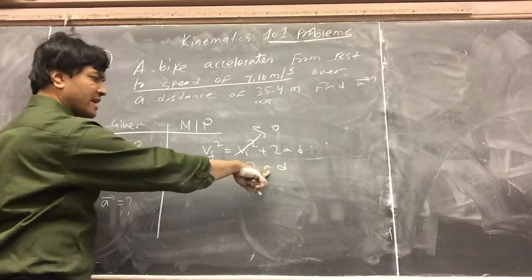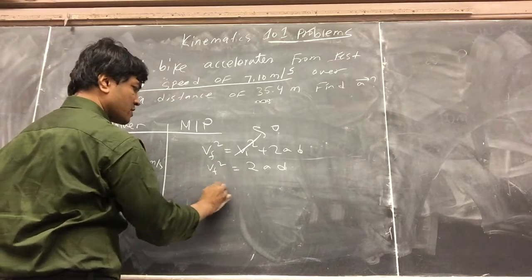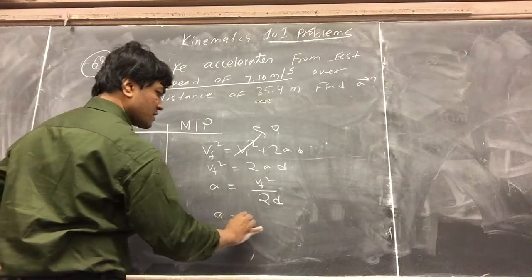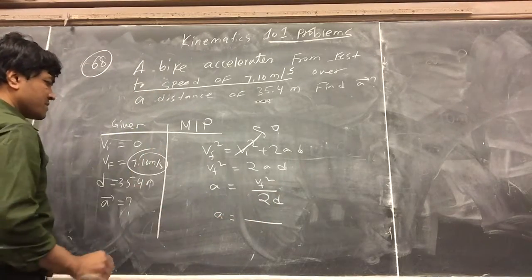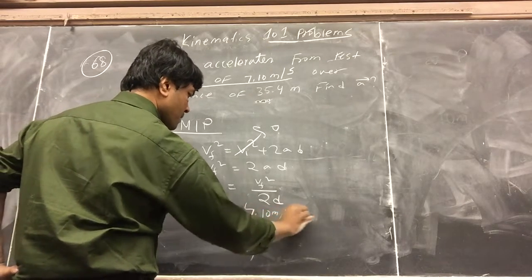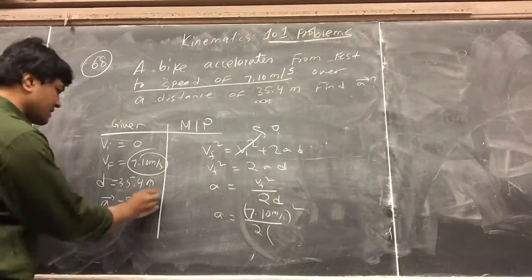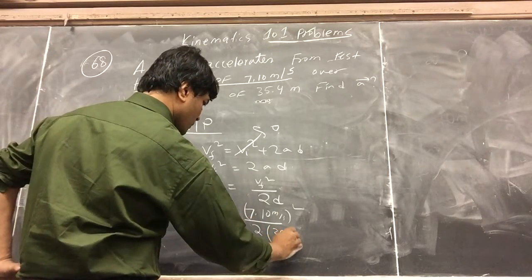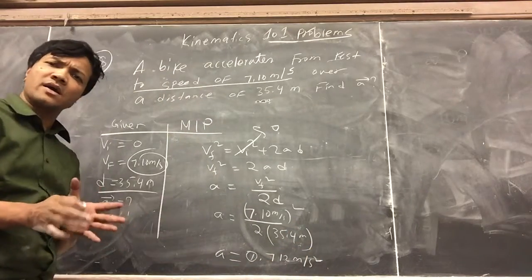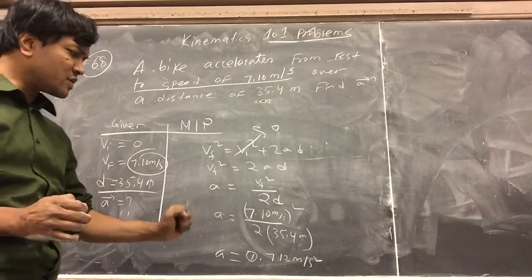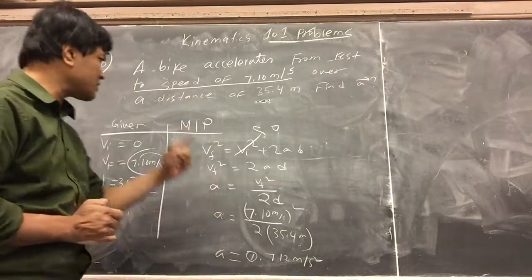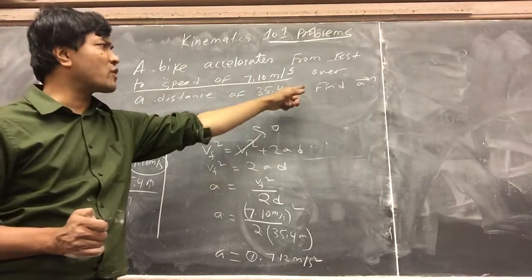We want to find the acceleration, so acceleration must be v final squared over 2d. So acceleration is 7.10 meters per second squared, divided by 2 times the distance 35.4 meters. The bike has been accelerating at 0.712 meters per second squared for 35.4 meters.